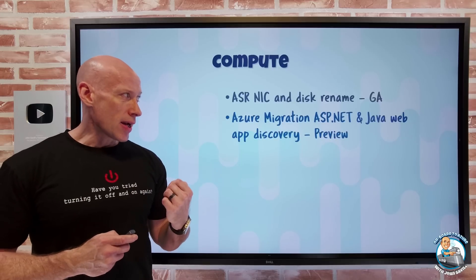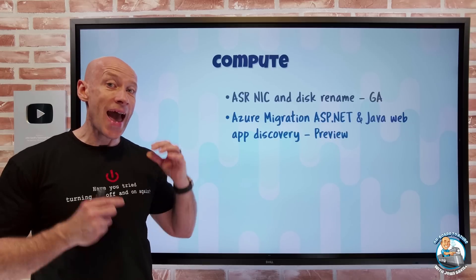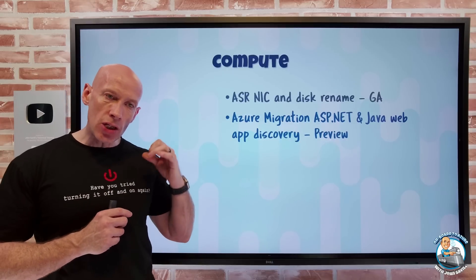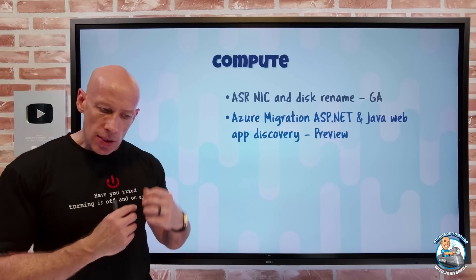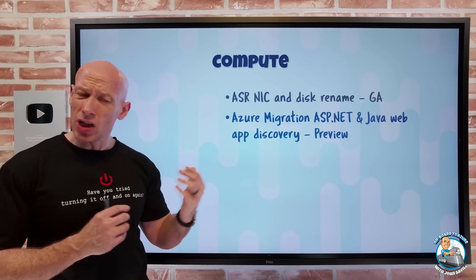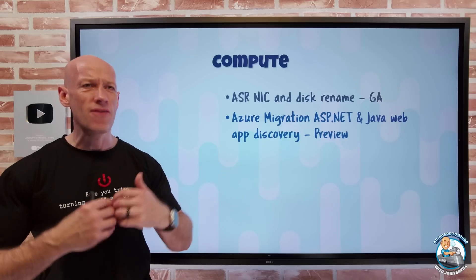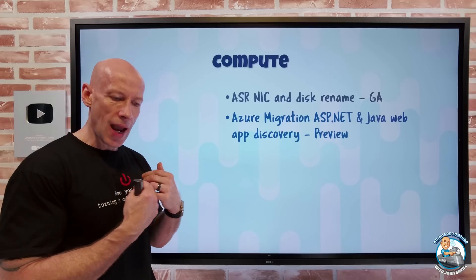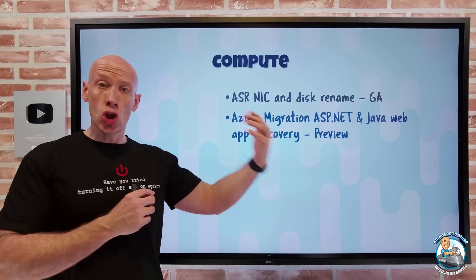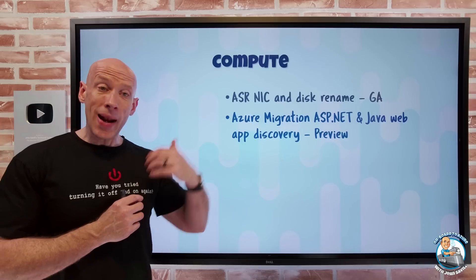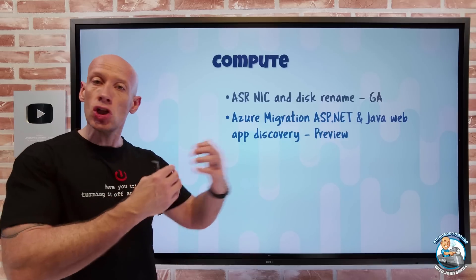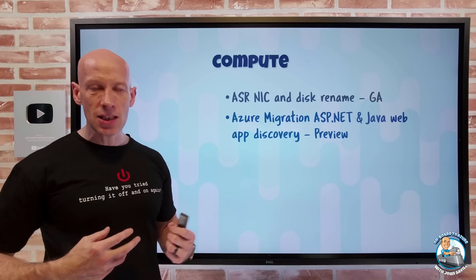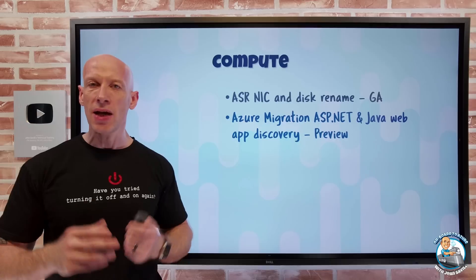For Azure Migrate, we now have support for ASP.NET and Java applications running on IIS and Tomcat. Today this is all about discovery and assessment - it will be able to discover those applications whether on bare metal, a Hyper-V VM, or a VMware virtual machine, and assess suitability for migration to Azure App Service, what SKU and plan to use, any considerations, and the estimated cost. It won't migrate all of those today, but in terms of assessment and getting ready, it will give all of that information in preview.